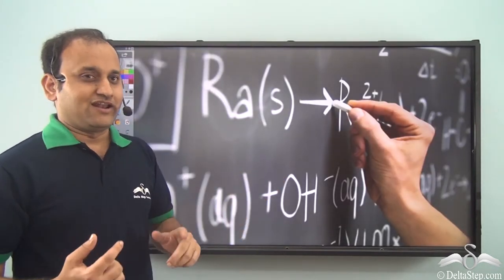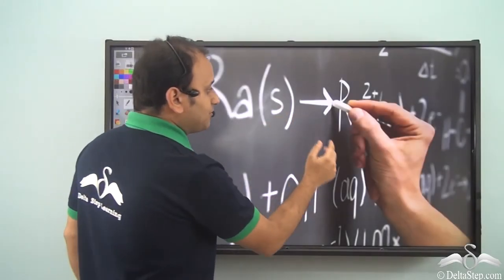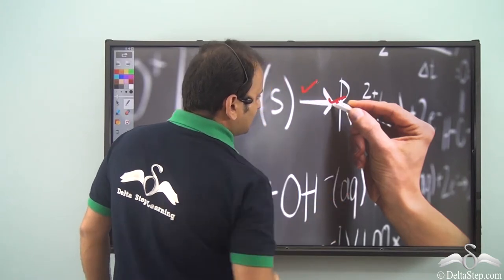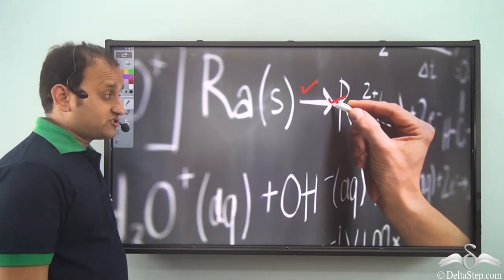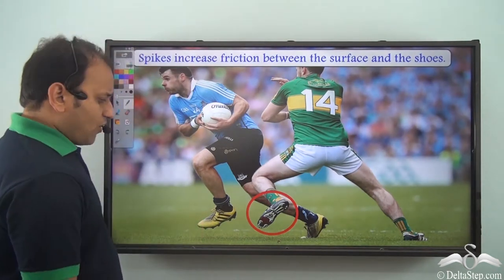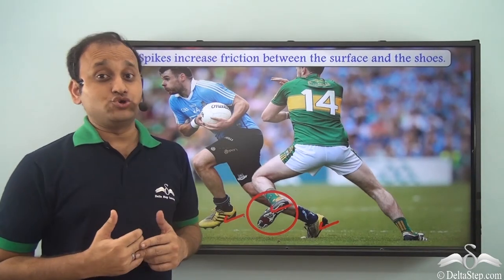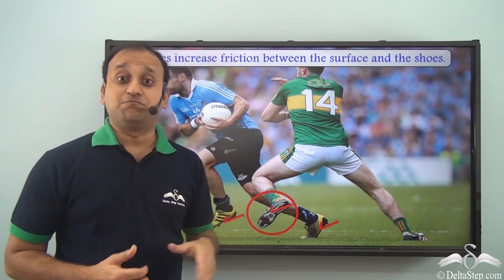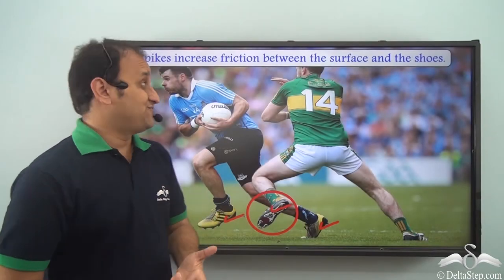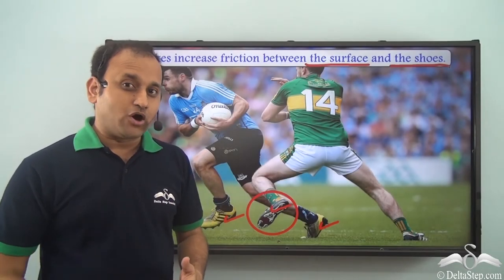What about writing? Writing on a blackboard is also because of friction. Without friction you wouldn't be able to write on the blackboard, because there will be no rubbing of the chalk with the blackboard, and if there is no rubbing — no frictional force — then no writing either. Have you seen that players have spikes in their shoes? These spikes increase friction between the surface and the shoes, allowing players to run without worrying about slipping.